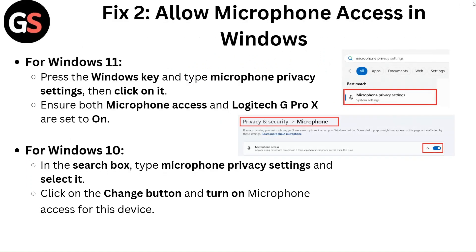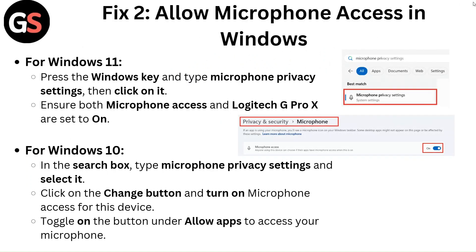Fix 2: Allow microphone access in Windows. For Windows 11, press the Windows key and type microphone privacy settings, then click on it. Ensure both microphone access and Logitech G Pro X are set to on.